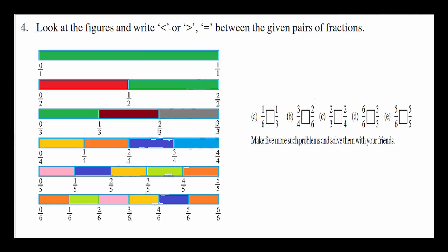Now based upon this number line look at the figure and write signs between the given fractions using this picture. 1 over 6 or 1 over 3. As you can see, 1 over 6 is lesser than 1 over 3 in the picture. Similarly 3 over 4. It is here.